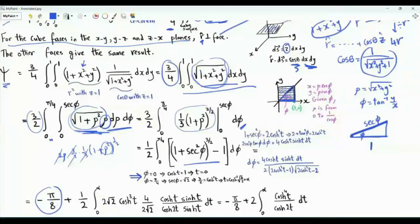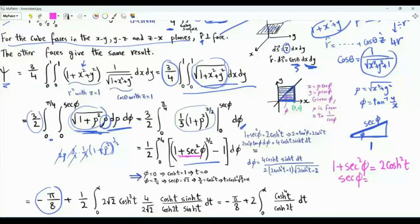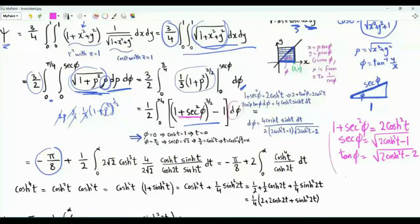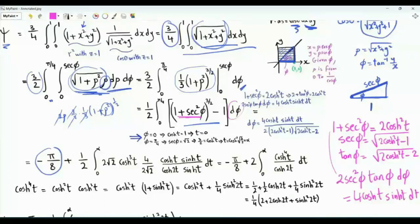To carry out this integration we use the substitution 1 plus sec squared phi equals 2 cosine squared t. This means sec phi equals the square root of 2 cosine squared t minus 1. Since sec squared phi equals 1 plus tan squared phi, tan phi equals the square root of 2 cosine squared t minus 2. For d phi, we have 2 sec phi times (sec phi tan phi) d phi, so 2 sec squared phi tan phi d phi equals 4 cosine t times (minus sine t) dt. Thus d phi equals 4 cosine t sine t dt divided by tan phi divided by 2 sec squared phi, where sec squared phi equals 2 cosine squared t minus 1.